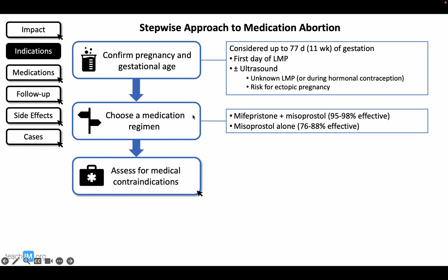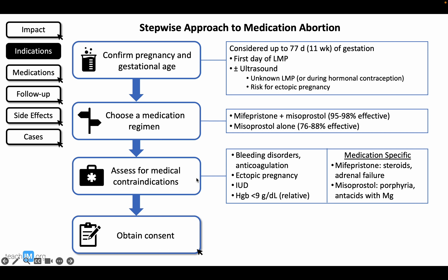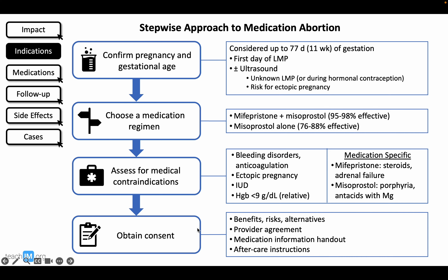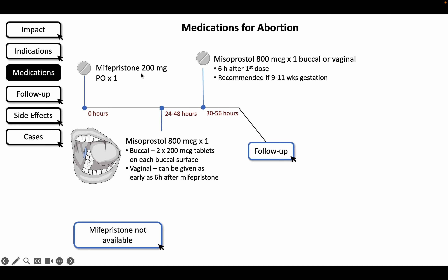Next, we choose a medication regimen with the combination of mifepristone and misoprostol being preferred. We then review the patient's medical history to assess for contraindications as listed here and do an informed consent process. Be sure that at least one provider at your practice has signed the prescriber agreement, which is available in our supplemental materials. If the patient has no contraindications and mifepristone is available, they are instructed to take one oral dose of mifepristone 200 mg in clinic or at home.